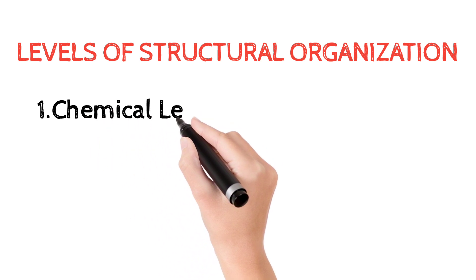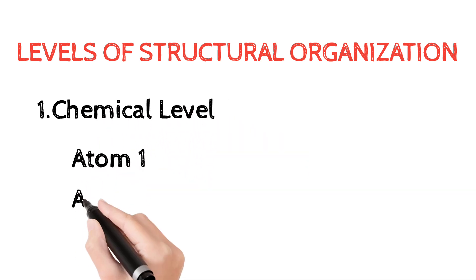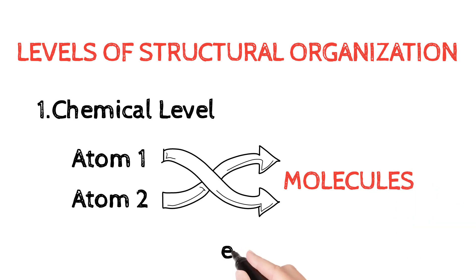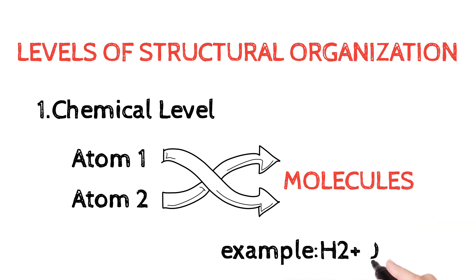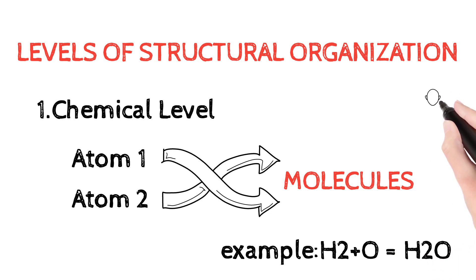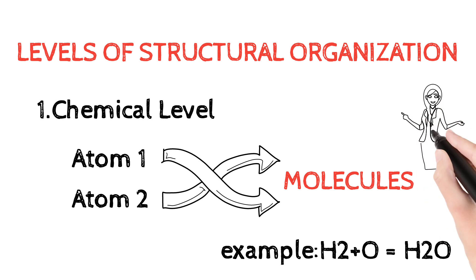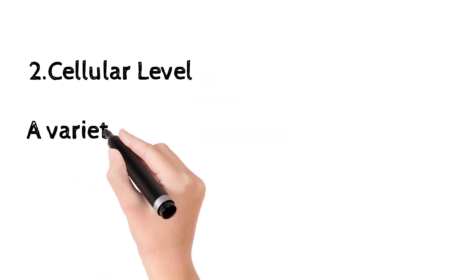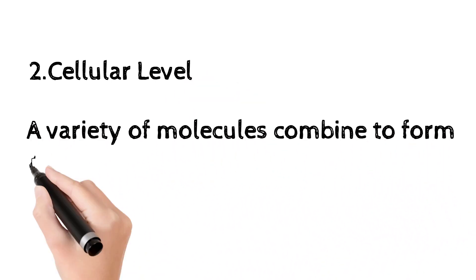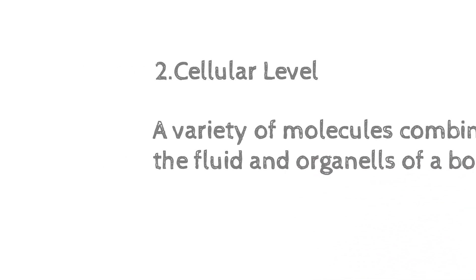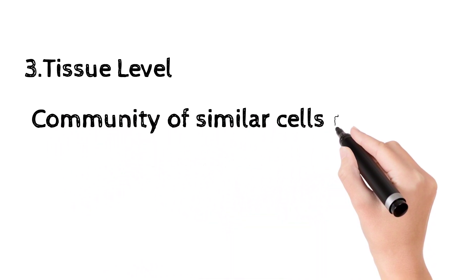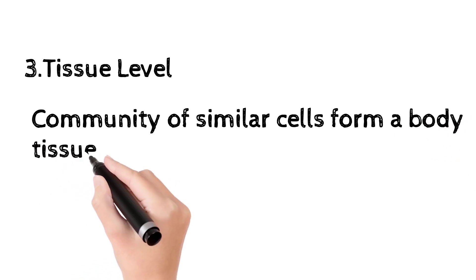The first level is the chemical level, where atoms combine to form molecules. For example, hydrogen and oxygen combine to form a water molecule. The next is the cellular level, where a variety of molecules combine to form cells with organelles. Then the tissue level, where similar cells combine to form body tissue. The next one is the organ level.